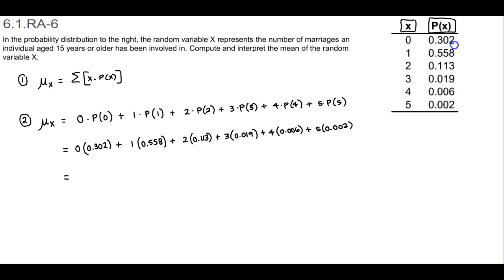When we multiply and add those all together, we get 0.875. So therefore, we can say that the mean, which is mu subscript x, is equal to 0.875 marriages.